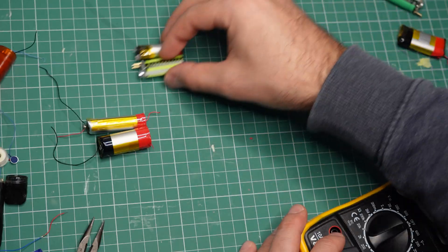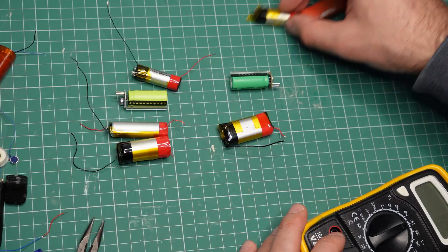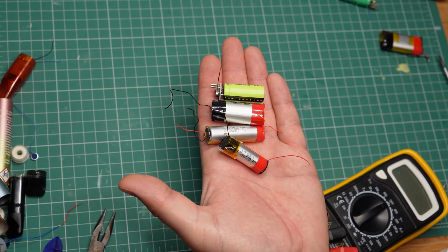So in the end, I got four usable battery cells and three over-discharged, which I am going to bring for recycling. What should I make with the good ones? Let me know in the comments.